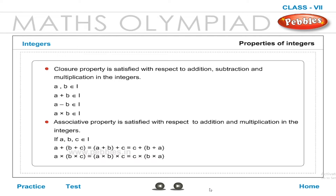Associative property is satisfied with reference to addition and multiplication in the integers. If A, B, C belong to I: A + (B + C) = (A + B) + C = C + (B + A). A × (B × C) = A × C = C × (B × A).